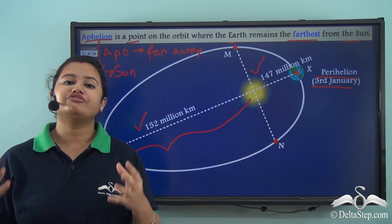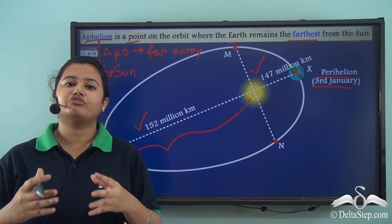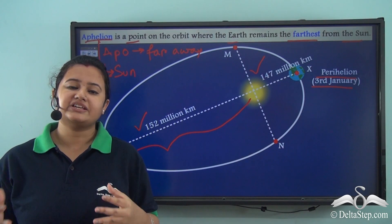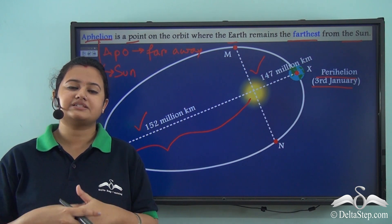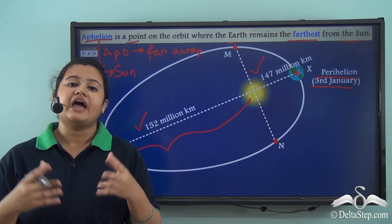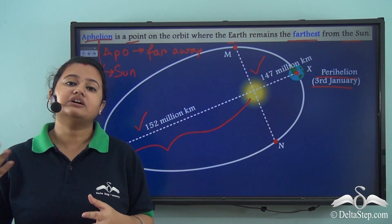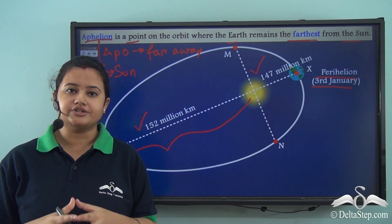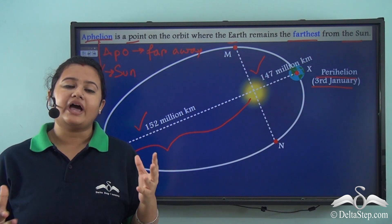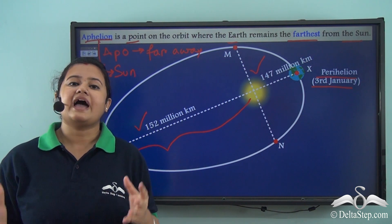In today's video we first understood the meaning of revolution — the movement of the earth around a fixed path or orbit. We learned that the orbit is not circular but elliptical, and due to this elliptical orbit the distance between the earth and the sun varies throughout the year. The closest position is known as perihelion, while the farthest distance from the sun is known as aphelion.